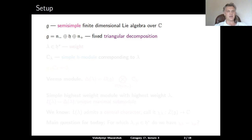With a fixed triangular decomposition, G is equal to N minus plus H plus N plus, where H is a Cartan subalgebra. This leads to a root system of G, and we choose some basis which decomposes it into a disjoint union of positive and negative roots. N plus is the direct sum of root subspaces for positive roots, and N minus is the direct sum of all root subspaces for negative roots.